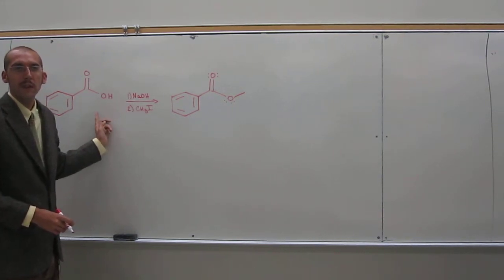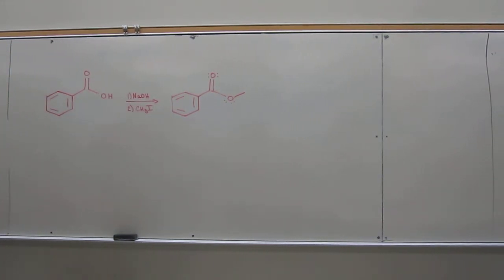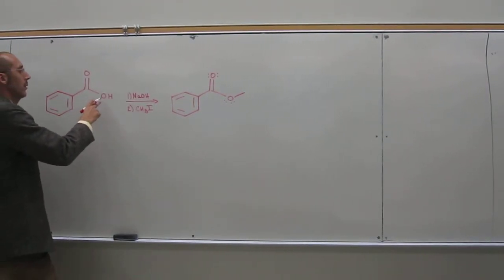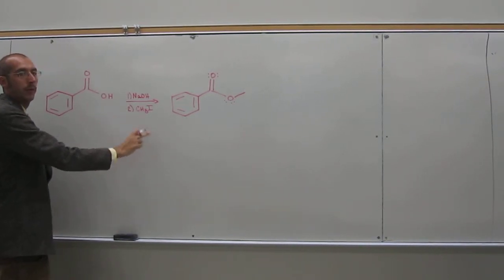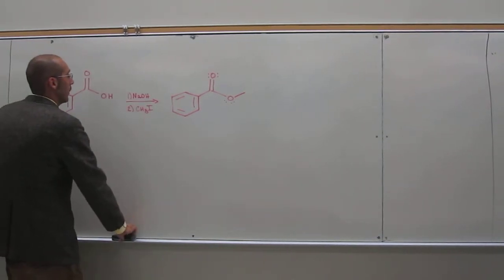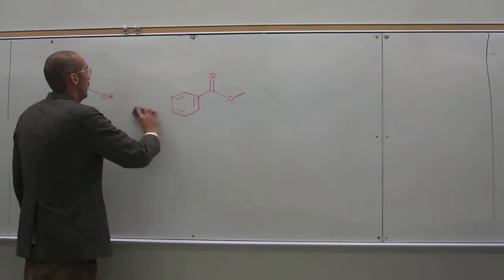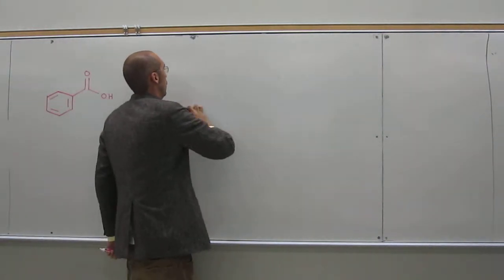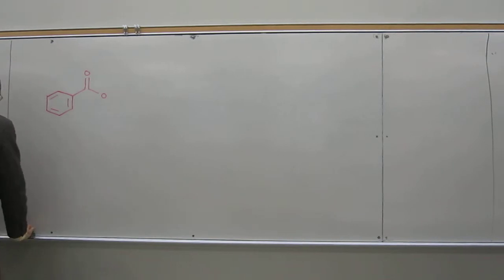First step is going to deprotonate the carboxylic acid. And then that's going to give you a nucleophile. And then that nucleophile is going to perform an SN2 reaction on the methyl iodide. So if you don't remember your SN2 reactions, backside attack, then you won't be able to do this mechanism. So let's hit it up.